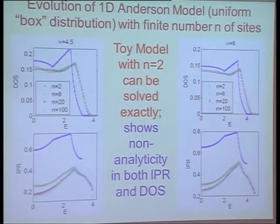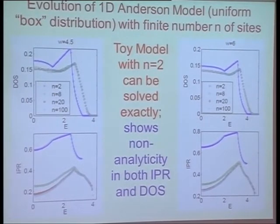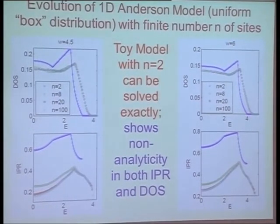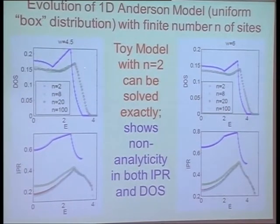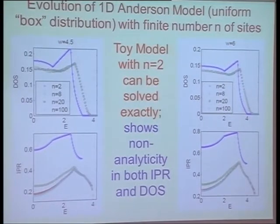We have done a toy model with only two sites in the Anderson model, where you can analytically calculate everything — the density of states and the inverse participation ratio for different Ws. That's the solid blue curve for the two-site model, and the triangles are the numerical data, showing that the numerics is perfectly fine. As you increase the size of the system where we don't have analytics, this kink that exists persists, though it changes in energy. So you can't get the critical value from the two-site model, but it is definitely there.